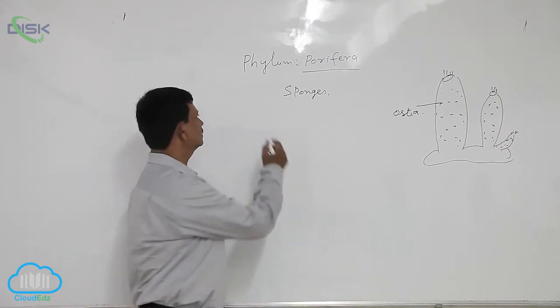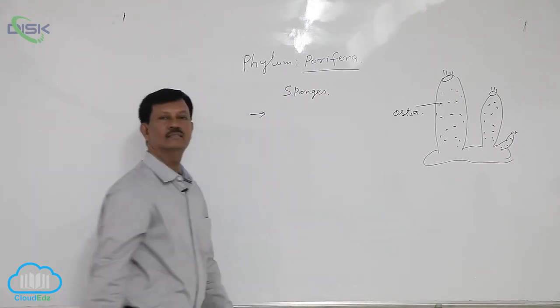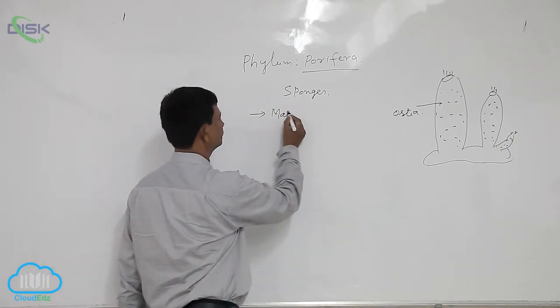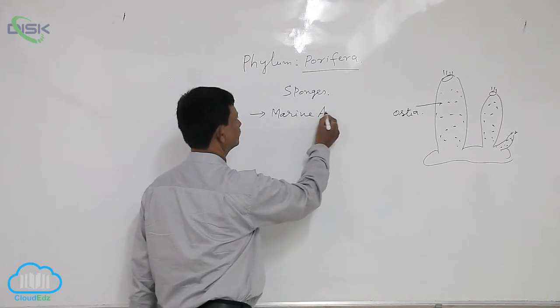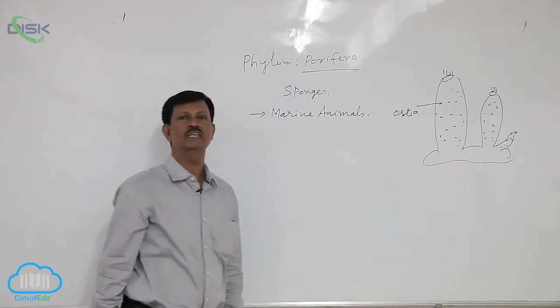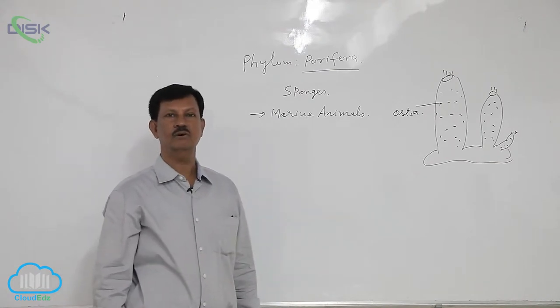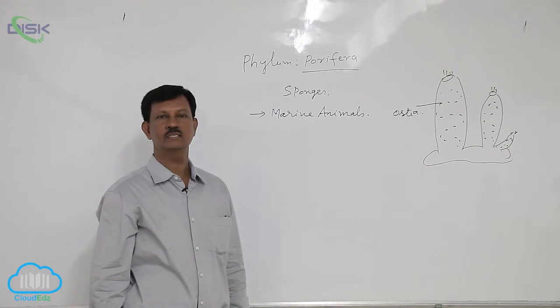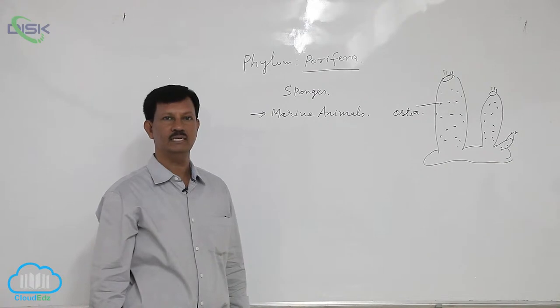The main characteristics are: they are marine animals. These are mostly found in direct water. Few are found in fresh water, for example the Spongillidae family. In the Spongillidae family, all are freshwater forms, example is Spongilla.